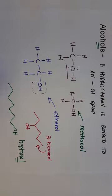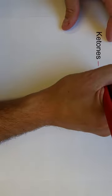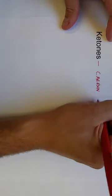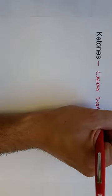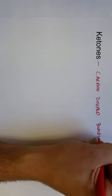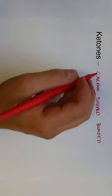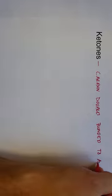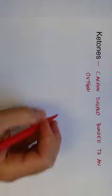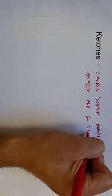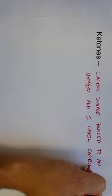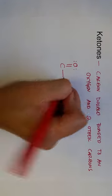That's the first functional group — an alcohol, which has an OH group bonded to a hydrocarbon. The second functional group we'll talk about is ketones. A ketone is when there is a carbonyl — a carbon double bonded to an oxygen — somewhere in the middle of the hydrocarbon, so that carbon is not connected to a hydrogen; it's connected to two other carbons and the oxygen.